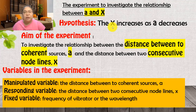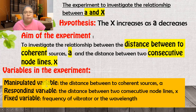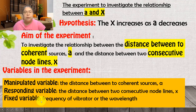The experiment investigates the relationship between the distance between coherent sources (a) and the distance between two consecutive node lines (X). 'Consecutive' is important — it means the next one. The manipulate variable is 'a' (the source separation). The responding variable is X, the distance between two consecutive node lines.